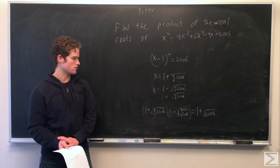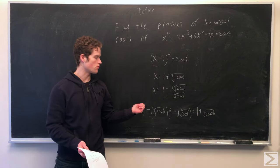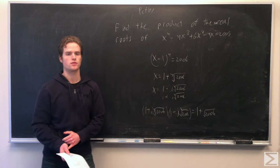So we multiply together our two non-real roots and we get one... The product is 1 plus root 2006. And that's our answer.